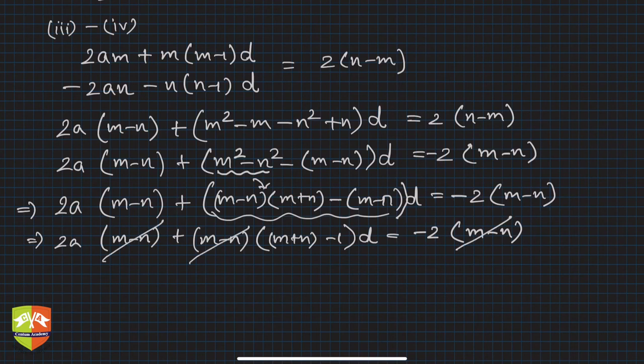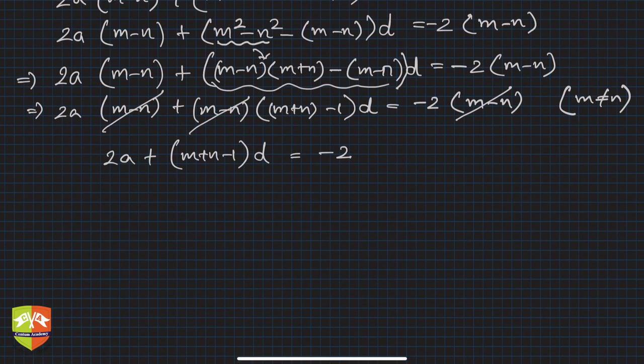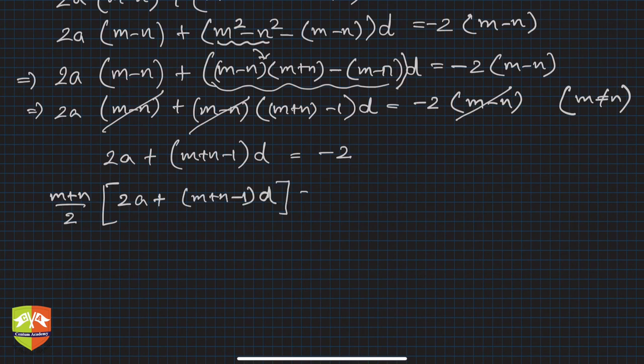Now you see you can cancel m minus n because they are common to all, common factor to every term. So m minus n gets cancelled, assuming m is not equal to n, because if m is not equal to n then m minus n becomes 0 and you can't cancel 0 from the entire equation. So what do we get? We get 2a plus m plus n minus 1 times d, and this is equal to minus 2, isn't it? Now if I multiply the entire equation by m plus n by 2, this will become 2a plus m plus n minus 1 times d, and this one becomes minus 2 times m plus n by 2. Why did I multiply?